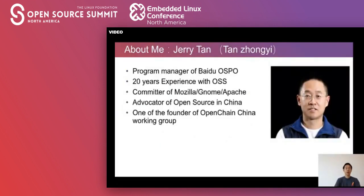First, I'll introduce myself a little bit. My name is Tan Zhongyi. You can call me Jerry. I'm a program manager of Baidu Open Source Program Office. I have worked in the open source community for over 20 years. I'm a creator of Mozilla, Gloom, and Apache Foundation. I'm an advocate of open source in China and also one of the founders of OpenChain China Working Group.